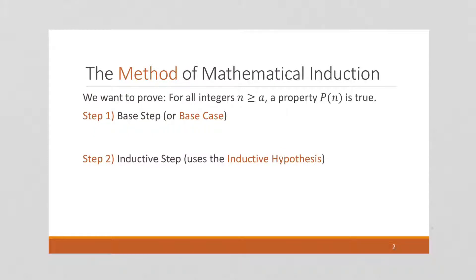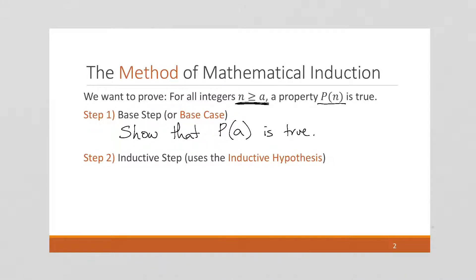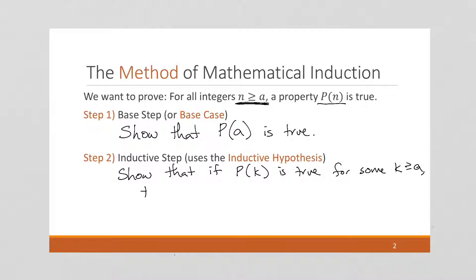First of all, let's remind ourselves of the method of mathematical induction. We're trying to prove a property p is true for all integers n greater than or equal to a, so p of n is true. We're going to start by showing that p is true for that initial value, p of a. Then in the inductive step, we want to show that if p of k is true for some k greater than or equal to a, then p of k plus 1 is true. If it's true for some value in the sequence, does that necessarily mean it's true for the following value? And if it is, and we know it's true for the first value in the sequence, we've proved our case.